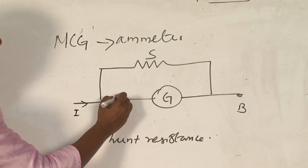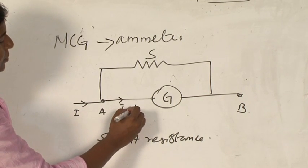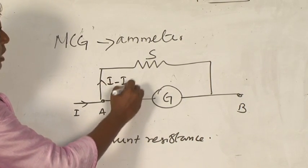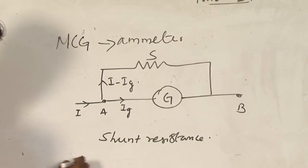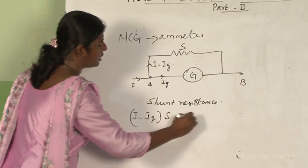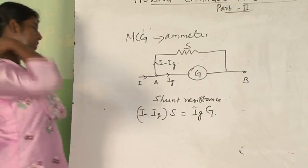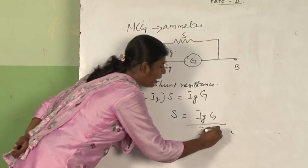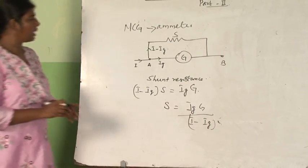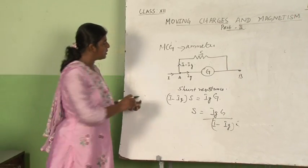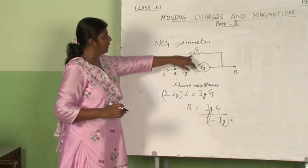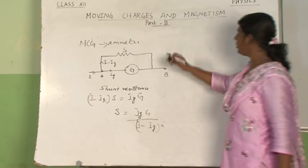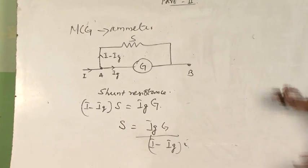Here the current is I, on one side it is IG, and on the other side it is I minus IG. So you write: (I minus IG) into S is equal to IG into G, where S is the shunt resistance. Therefore S is equal to IG into G divided by (I minus IG). IG is the galvanometer current and I is the total current flowing through. A small shunt resistance is connected in parallel to your galvanometer to convert it into an ammeter.